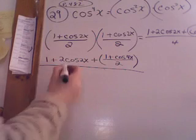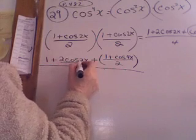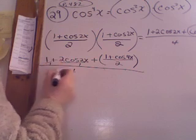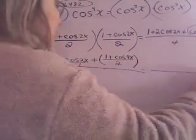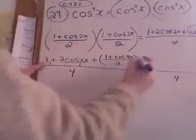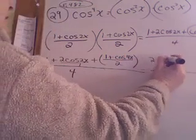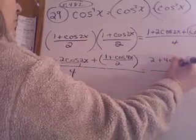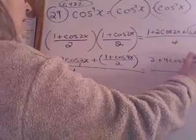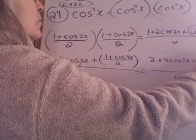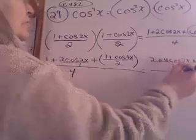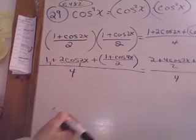And this whole thing is over 4. So, I'm getting kind of a mess with fractions here. Let's get a 1 under there, 1 under here. We need common denominators. So, we'll have a complex fraction for a second. This is going to be 2 plus 4 cosine 2x plus 1 plus cosine 4x all over 2.